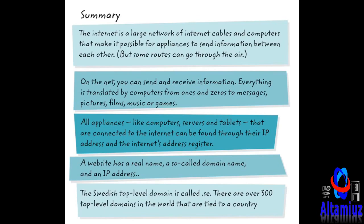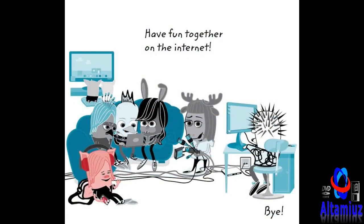A website has a real name, a so-called domain name, and an IP address. The Swedish top-level domain is called .se. There are over 300 top-level domains in the world that are tied to a country. Now you know a little more about the global computer network called the internet, which is used by 2.7 billion people. Have fun on the internet!